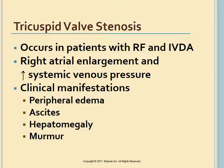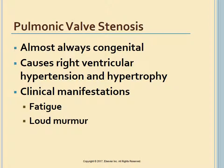Diseases of the tricuspid and pulmonic valves are uncommon, with stenosis occurring more frequently than regurgitation. Tricuspid stenosis occurs almost exclusively in patients with rheumatic fever or IV drug users. It results in right atrial enlargement and elevated systemic venous pressures; manifestations include peripheral edema, ascites, hepatomegaly, and a diastolic low-pitched murmur with increased intensity during inspiration. Pulmonary stenosis is almost always congenital and results in right ventricular hypertension and hypertrophy, with manifestations of fatigue and a loud murmur.